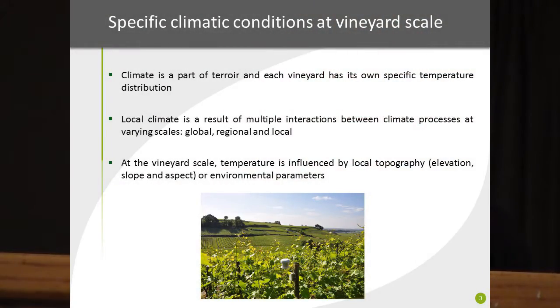It is really important to study climate at vineyard scale, at a very local scale, because each vineyard has its own specific temperature distribution, which is the result of multiple interactions between climate processes at varying scales from global to local. At vineyard scale, temperature is influenced by local environmental parameters like topography, or environmental parameters like forest or water bodies.